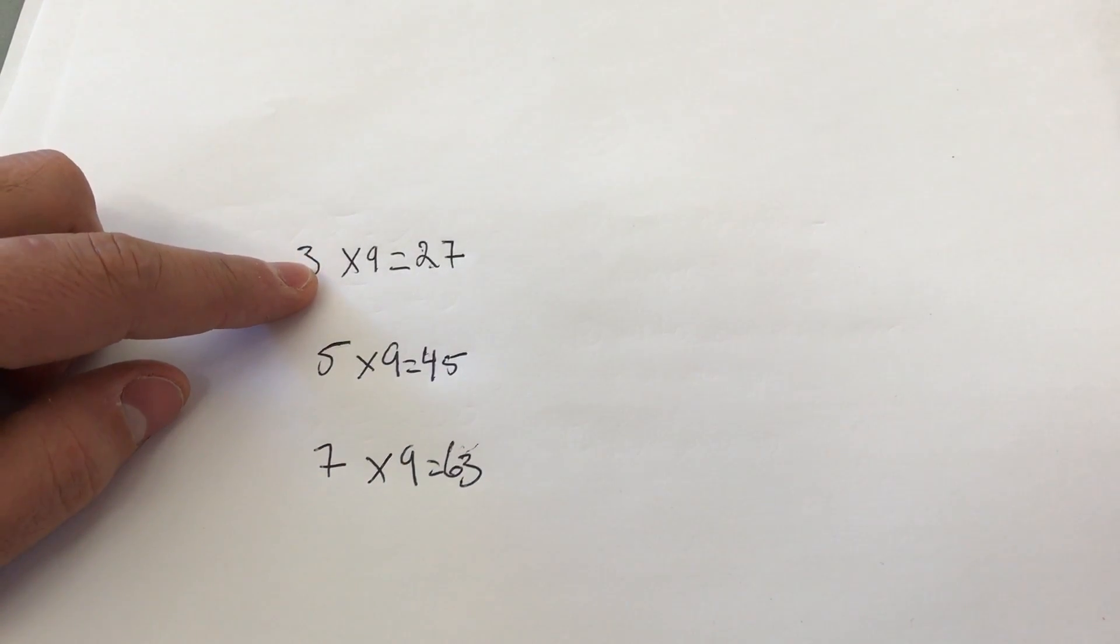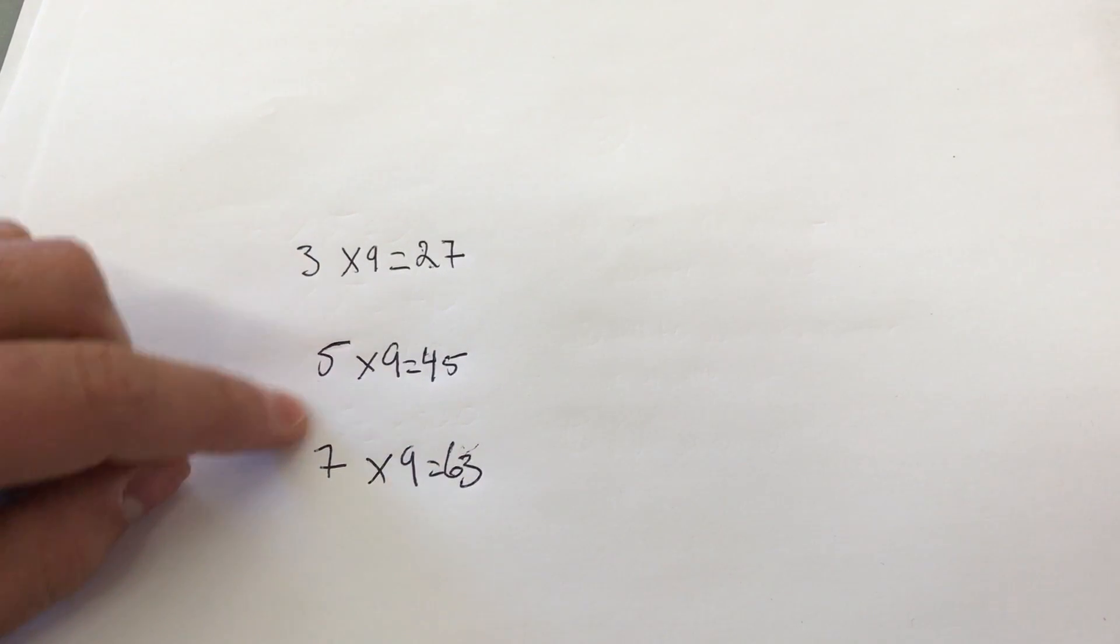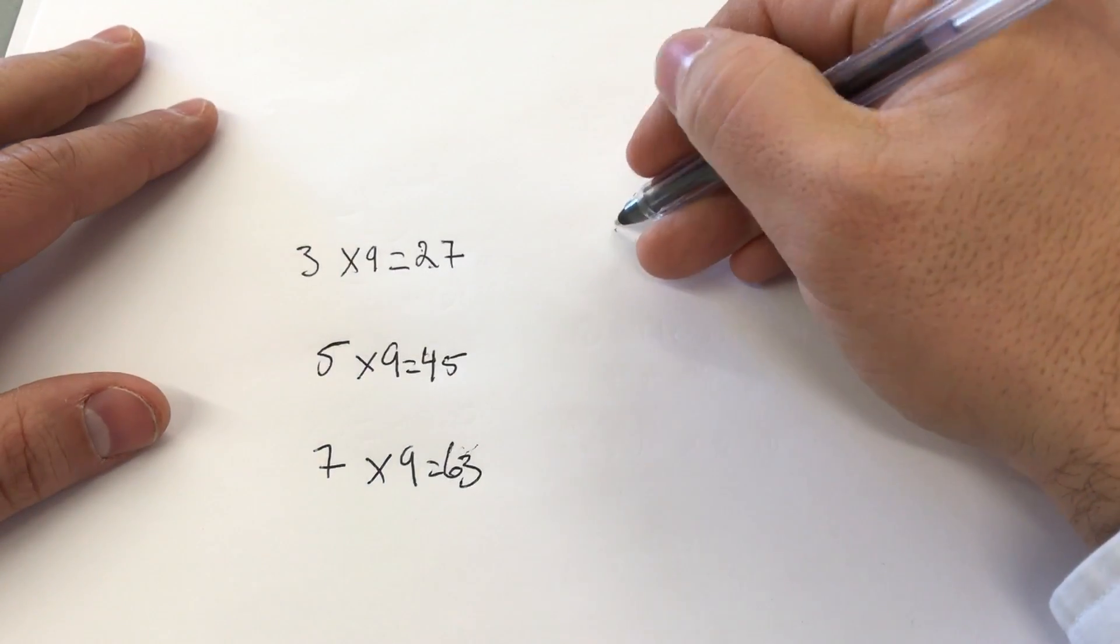3 times 9 is 27. 5 times 9 is 45. 7 times 9 is 63. Let's do one more just for fun.